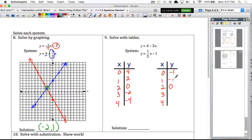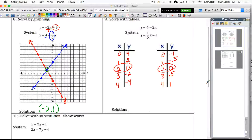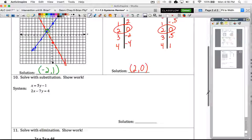...0, positive 1 half, positive 1. But both of the equations share that point 2, 0. So 2, 0 is the solution.